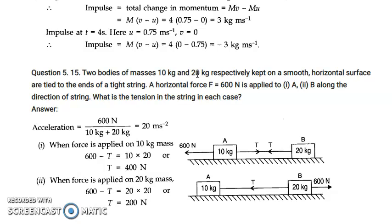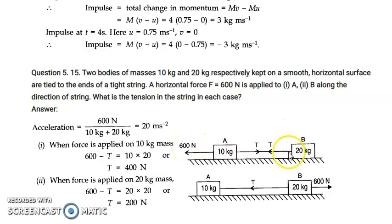Question 5.15: There are two blocks A (10 kg) and B (20 kg) connected by a string. A horizontal force of 600 N is applied. We need to find the tension in the string. Using F = ma with total mass 10 + 20 = 30 kg, net acceleration = 600/30 = 20 m/s².